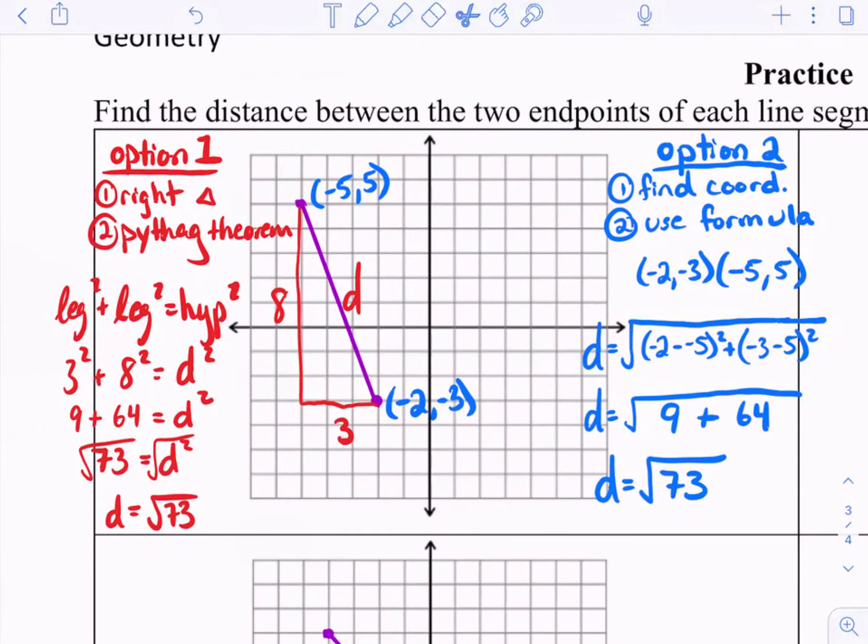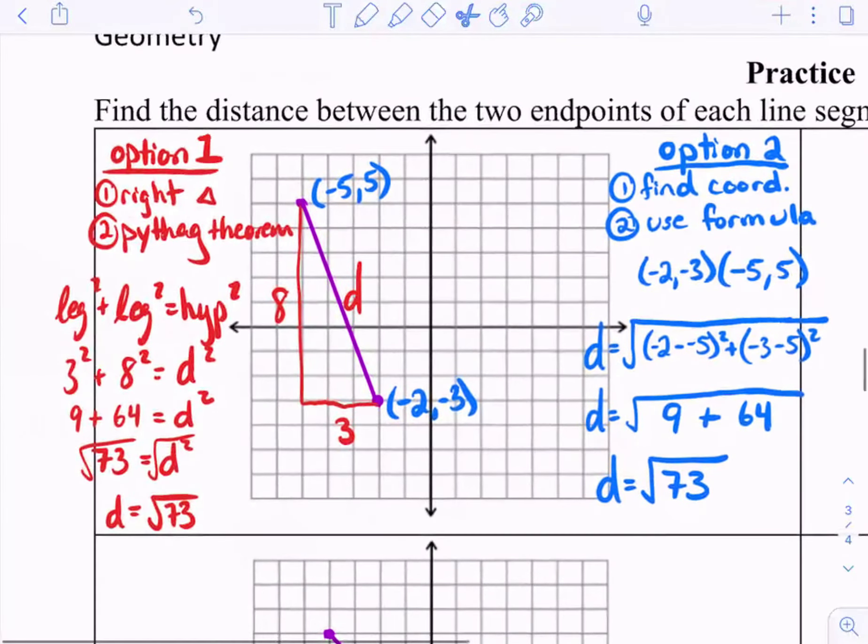For those of you who are still watching, I just did the first example of two different ways that you could solve it, okay? So option one is create a right triangle and do the Pythagorean theorem. That's if I give you the graph, it's easy. Your option two is you could still use the distance formula. So make sure you really know what the two coordinates are before you use the distance formula. So I'll keep this up while you guys complete the rest of the page.